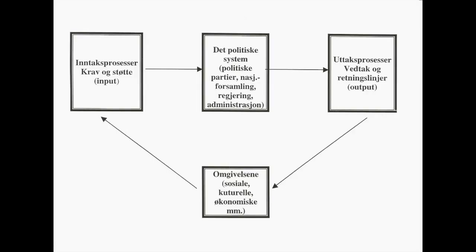Norway is a unitary state. In short, this means that the political authority is national. Municipalities and counties have only authority to the extent they receive delegated power from the parliament. Parliament is the national legislator and founder. Norway is a representative democracy, also called indirect democracy, where the people elect their representatives to parliament, county and municipal councils in national elections every four years. Indirect democracy is contrary to direct democracy, where the people themselves take part in the decisions.